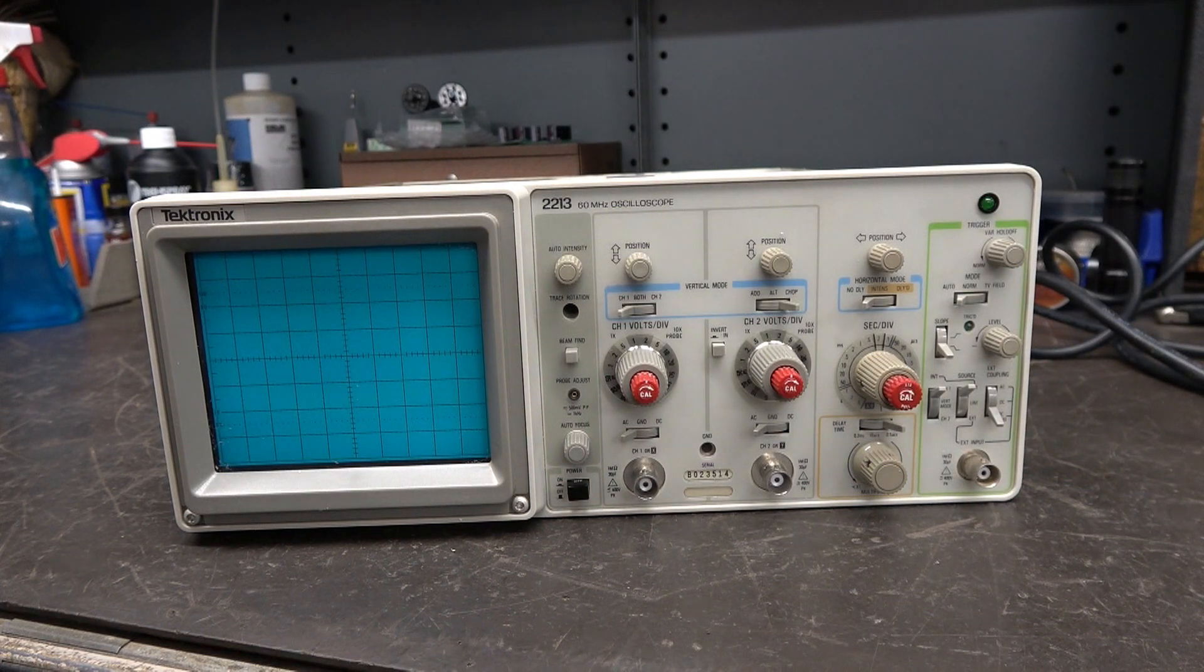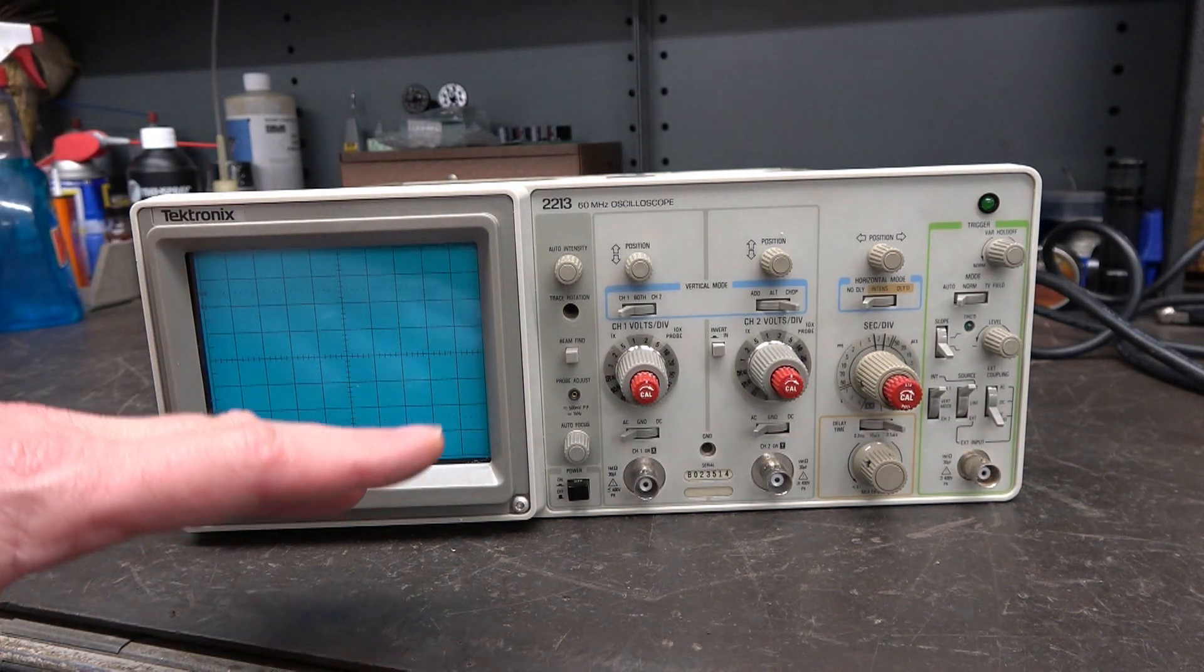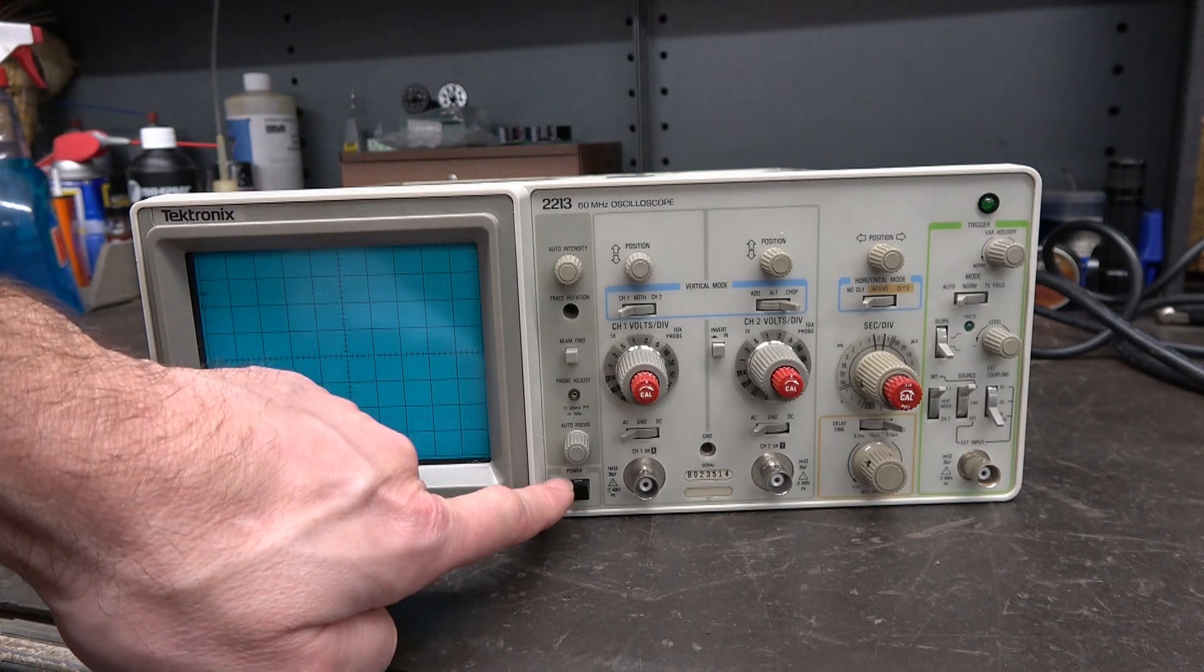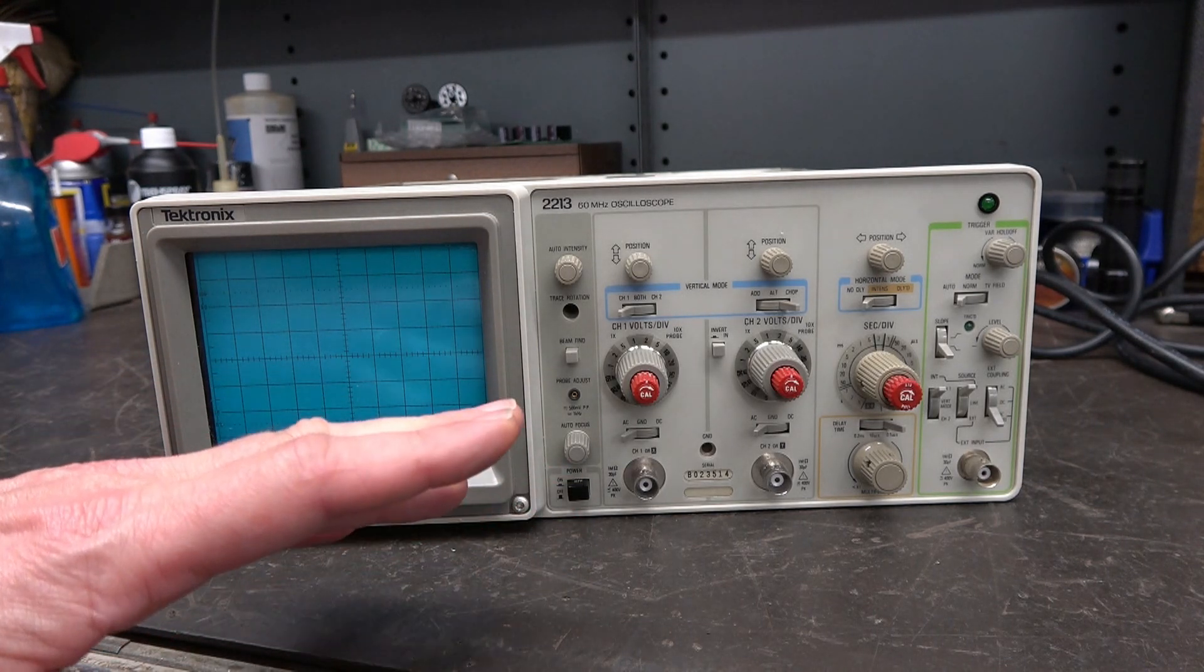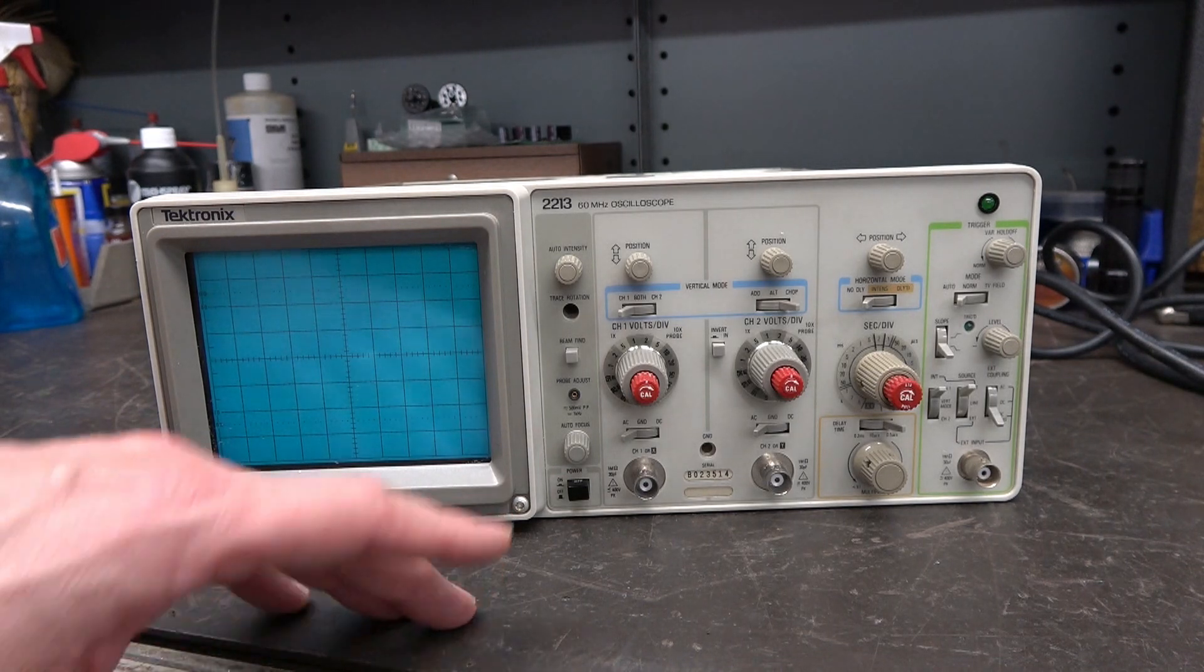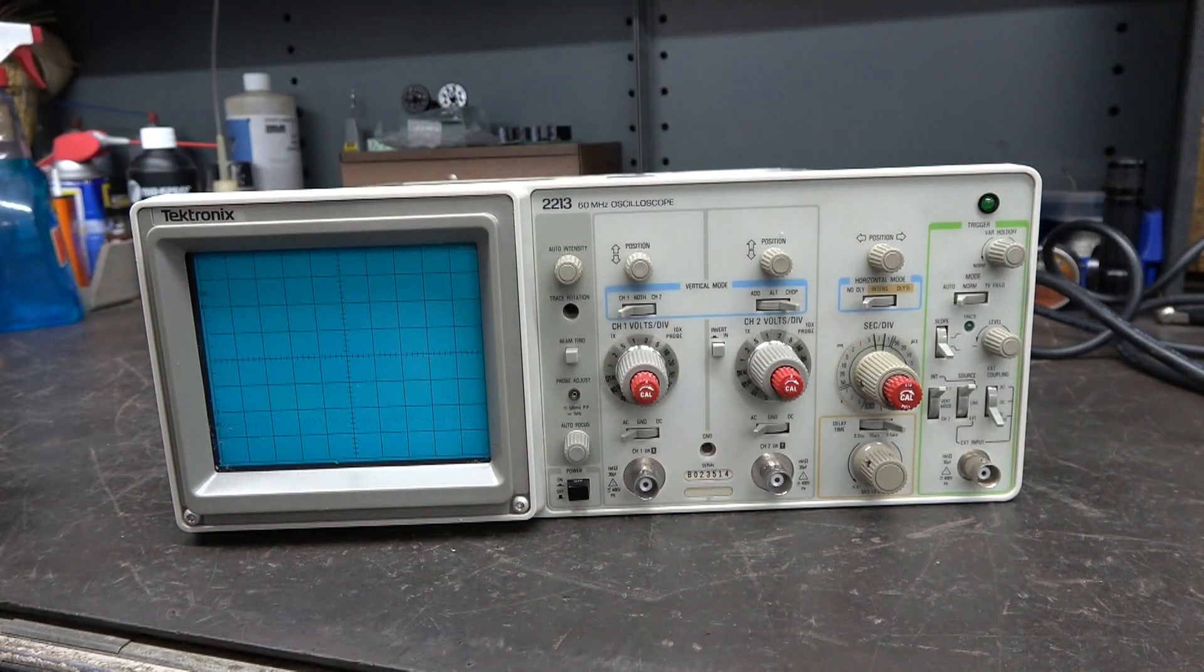So here is my 2213A. If you look at the A model, there is a power indicator lamp right here by the power switch, but this one didn't have one at all. Now you can see over here, now it does.